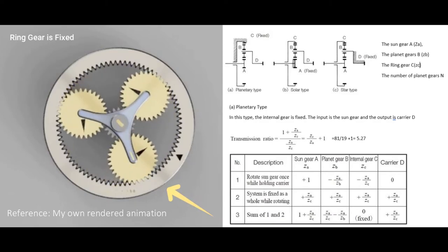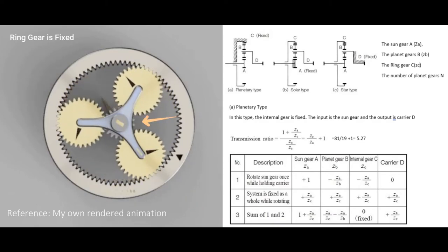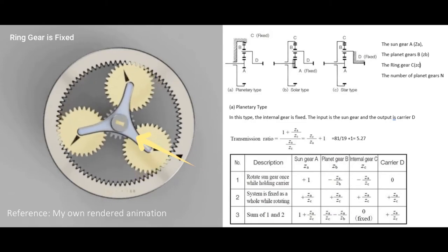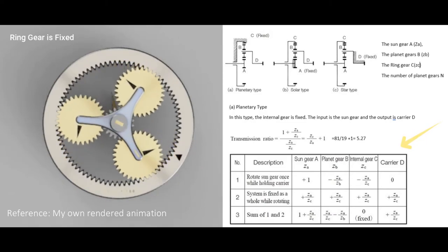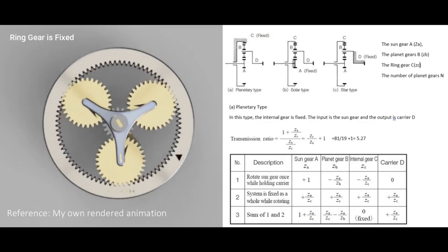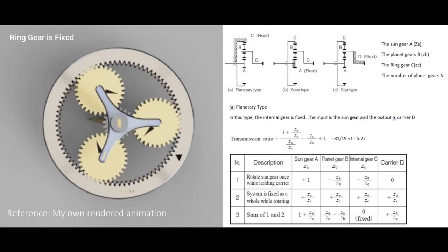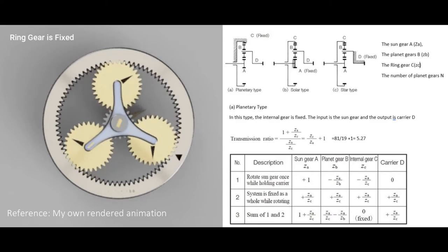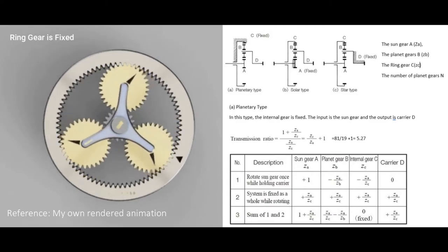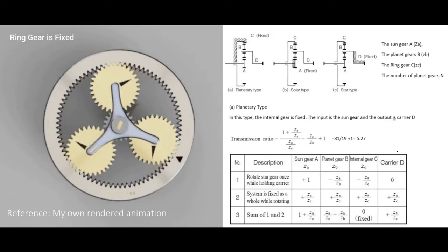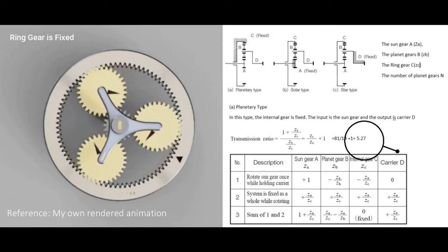In this type, the ring gear is fixed. The input is the sun gear and the output is the carrier D. The transmission ratio is calculated as used in the table. Note that the direction of rotation of input and output axes are the same. I have created the animation shown in the left to make visualization easier. In our case, as calculated, the transmission ratio is approximately 5.27.